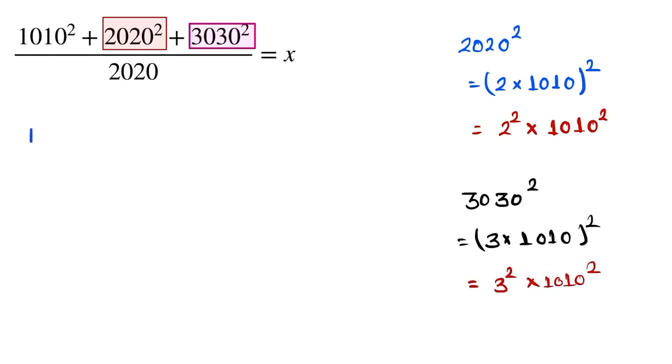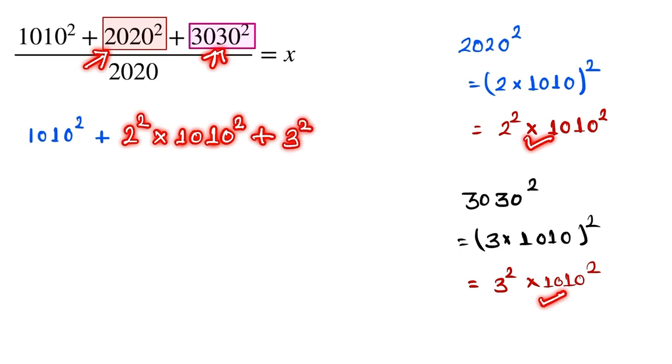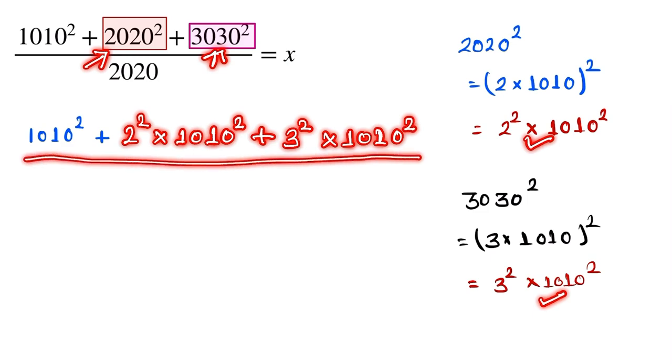Here is the value. This one is equal to this one and this one is equal to this one. Simply from the question, this one and this one is equal to 1010 squared plus 2 the square into 1010 the square plus 3 square into 1010 the square by 2020.